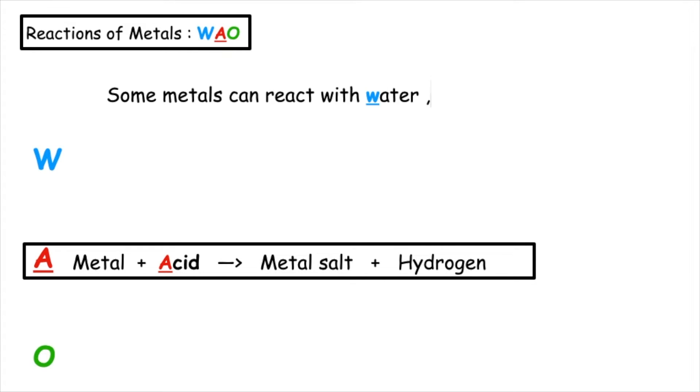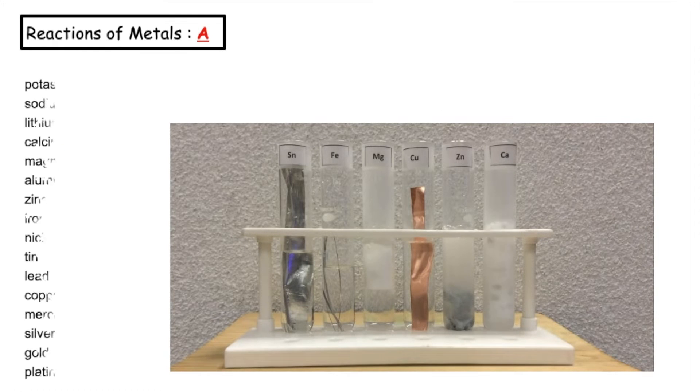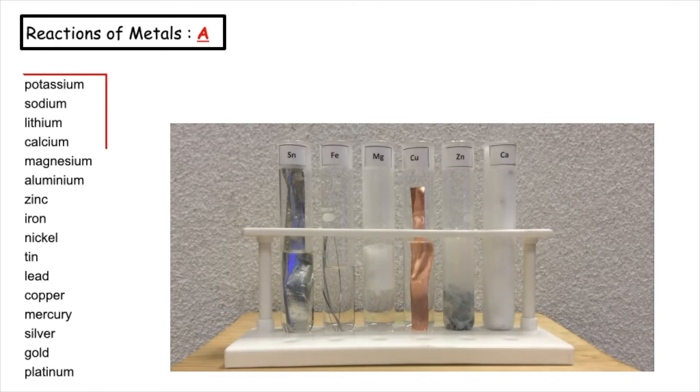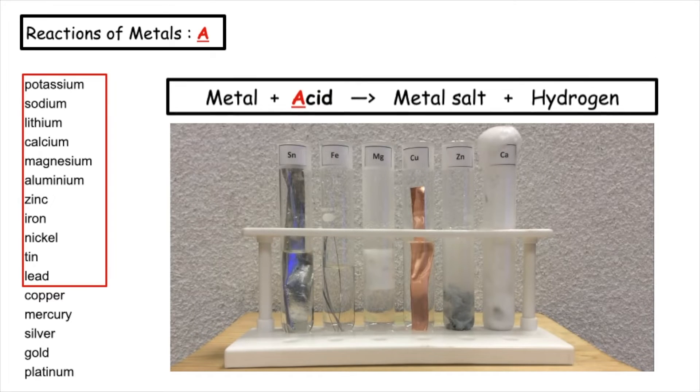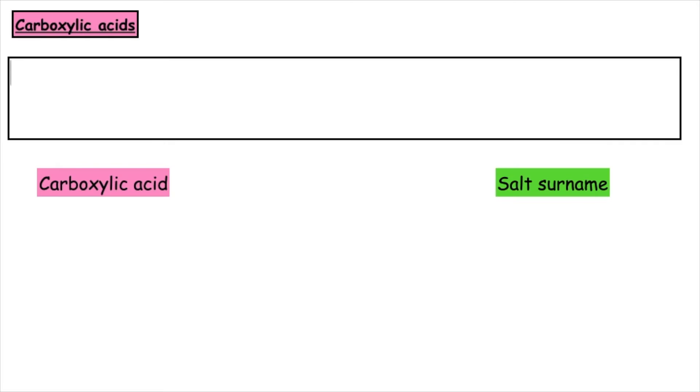Some metals can react with water, acid, or oxygen. The word equation for a metal reacting with acids is: metal plus acid produces a metal salt plus hydrogen gas. The reactivity series is a list of metals which start from the most reactive to the least reactive. Lead and above react with acids.